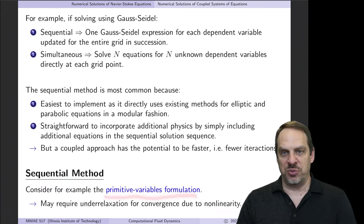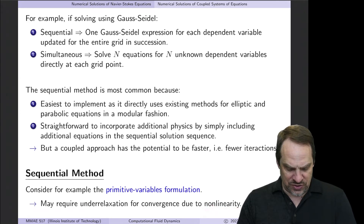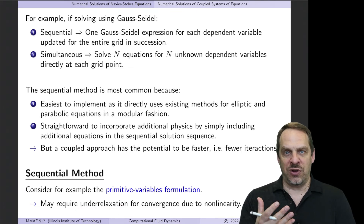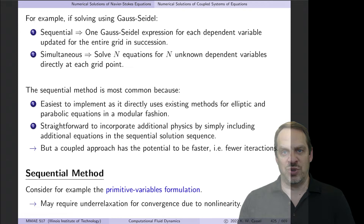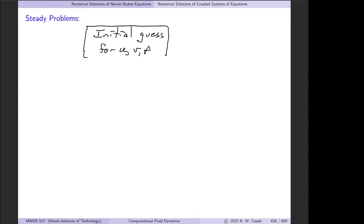Think of the primitive variables formulation where we're solving for u, v, and p. Because of the nonlinearity, it's likely we'd also have to implement under-relaxation. Let's schematically draw the algorithm to solve for u, v, and p sequentially. We start with an initial guess for u, v, and p, as we do for all iteration techniques. This is for the steady case — nothing is changing with time; we're just iterating until it converges.